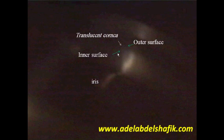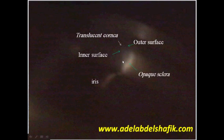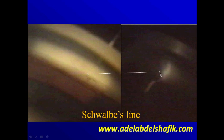This is the trabecular area — you can see the Schwalbe's line here, and posterior to it we get the trabecular meshwork. This is the most important sign you have to look for while examining during gonioscopy. Inner surface, outer surface, stroma, opaque sclera, then the Schwalbe's line — and posterior to it you get the slightly pigmented trabecular meshwork.